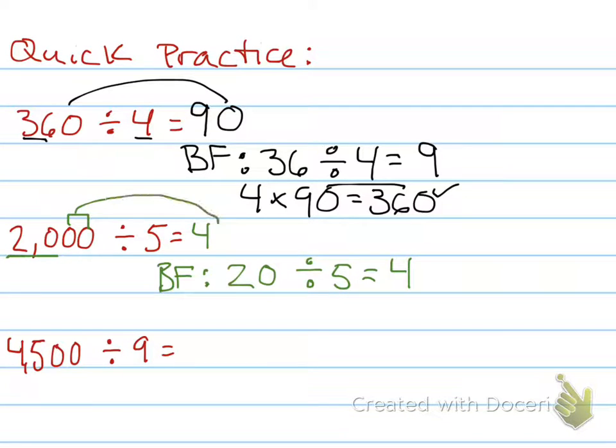How many zeros did I not use? Two. One. Two. Check my work. Divisor times my quotient. Five times four is 20. How many zeros? Two. One. Two. Did I get my dividend? Yes, I did.